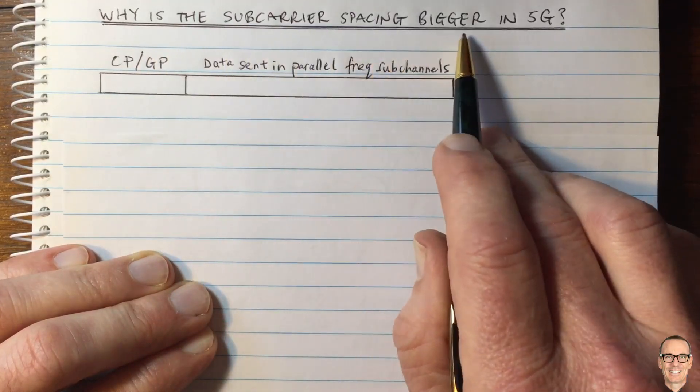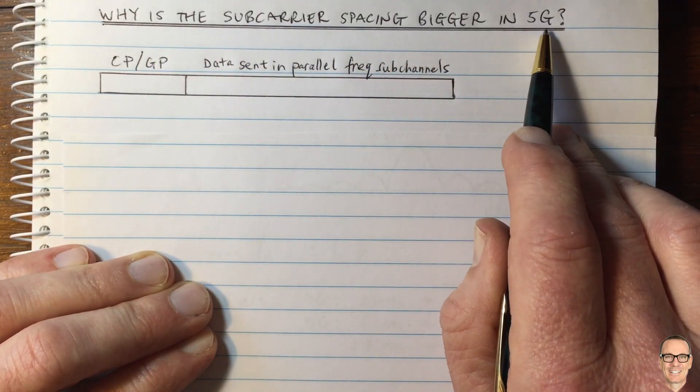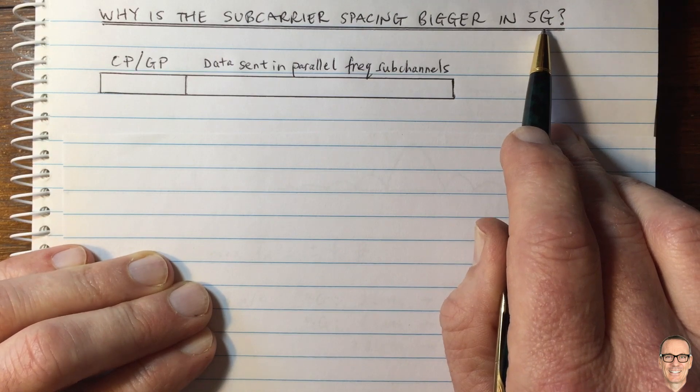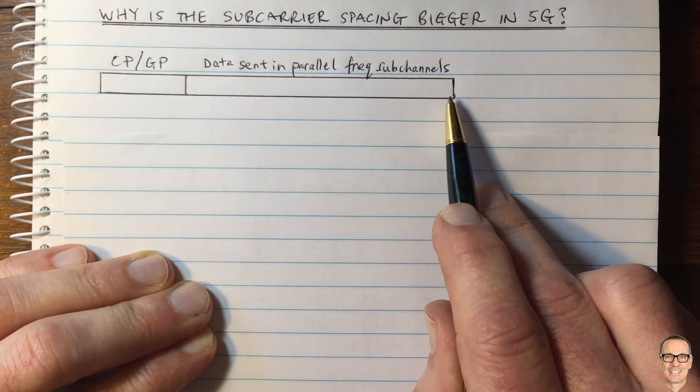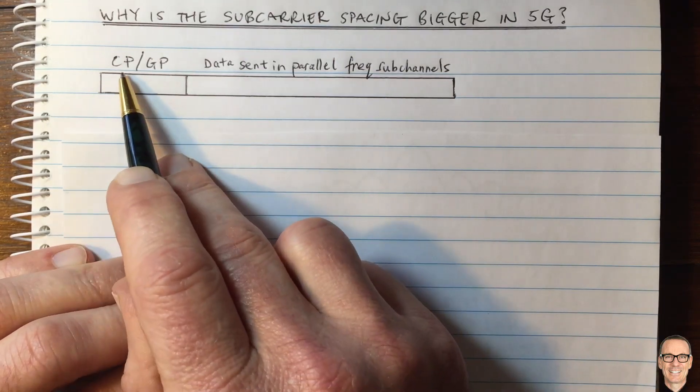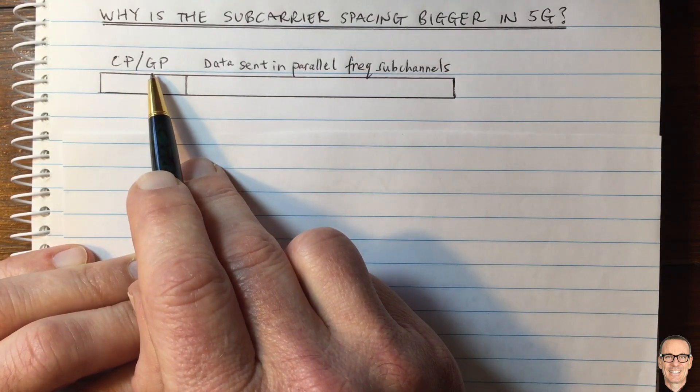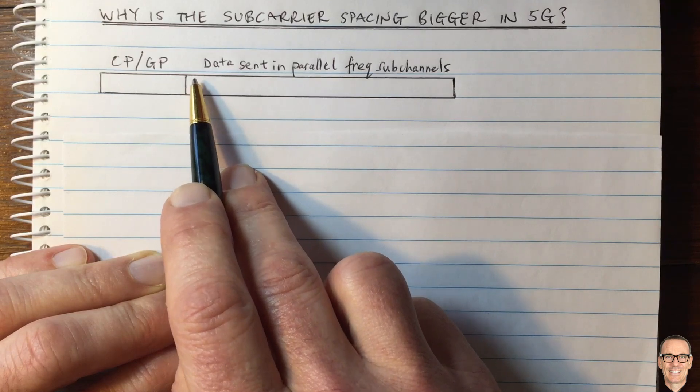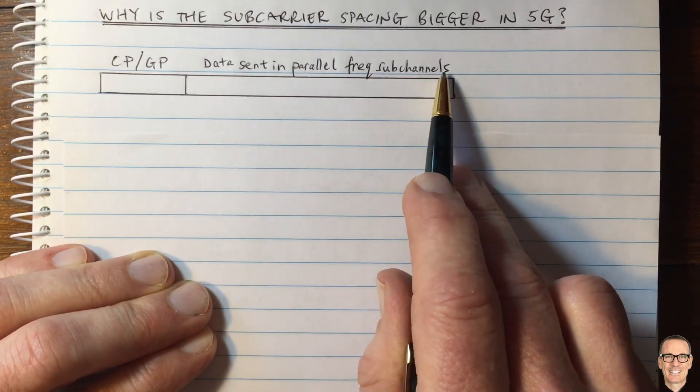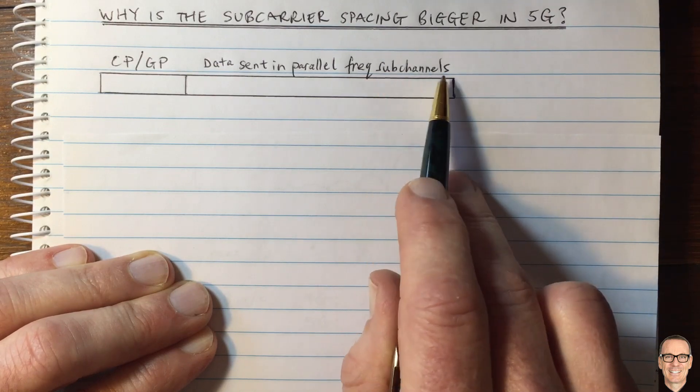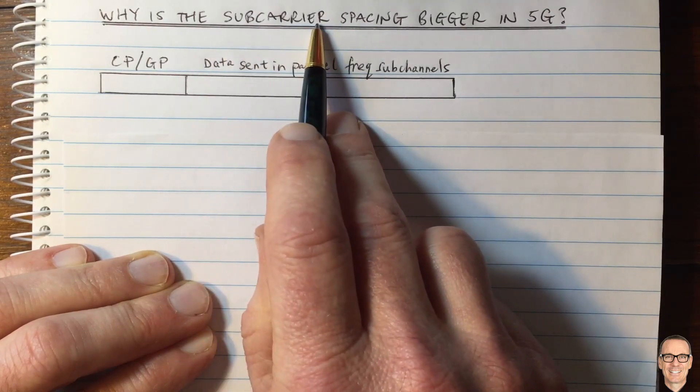Why is the sub-carrier spacing bigger in 5G mobile communications compared to 4G? Well, here we have a representation of an OFDM symbol. There's a cyclic prefix or sometimes a guard period, and then there's a period of time where data is sent in parallel frequency sub-channels, and that's sometimes called sub-carriers.